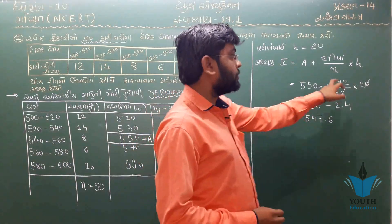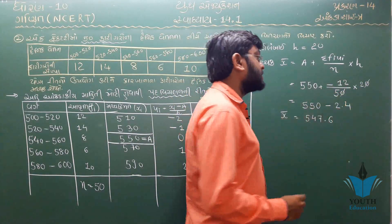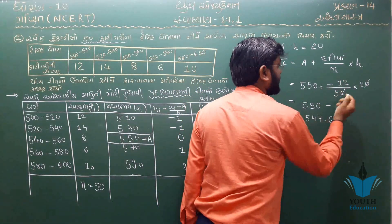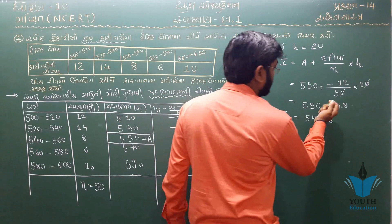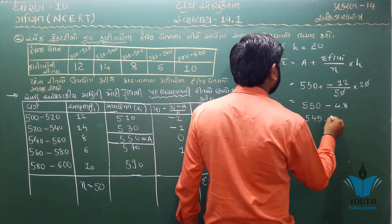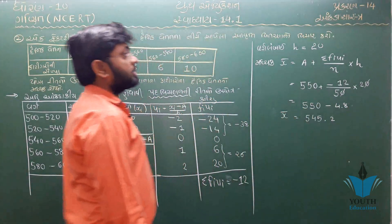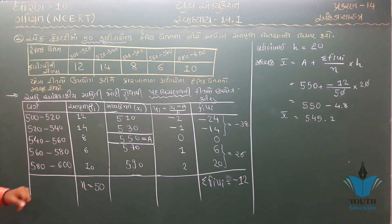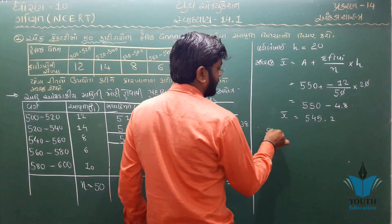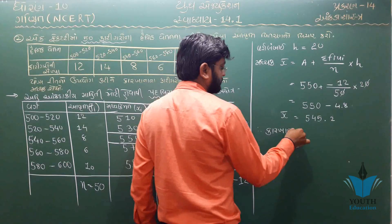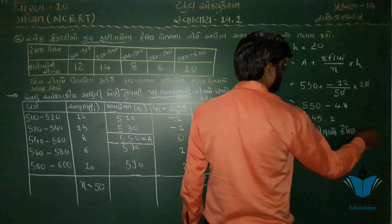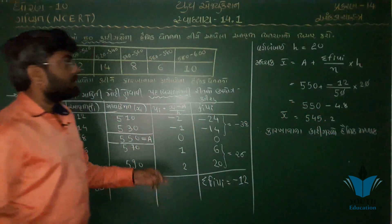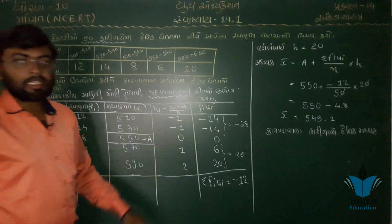ફરી ચકાસીએ: 24 ÷ 5 = 4.8, 550 − 4.8 = 545.2. માટે x̄ = 545.2. આ આપણો મધ્યક (Mean) છે. આ પ્રમાણે, 'યોગ્ય રીત'નો ઉપયોગ કરી, કારખાનાના કારિગરોના દૈનિક વેતનો (Daily Wages) નો મધ્યક = 545.2 (₹545.2) આવ્યો. Thank you.